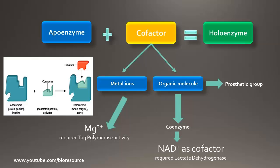Cofactors that are small organic molecules are called coenzymes, and most often these are derived from vitamins. The coenzyme can be either tightly or loosely bound to the enzyme. If tightly bound, they are called prosthetic groups. The loosely associated coenzymes are just like co-substrates.